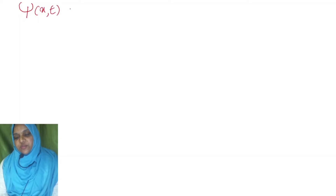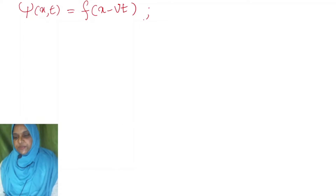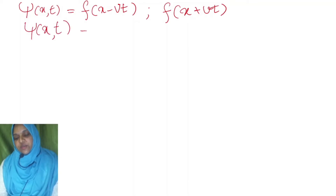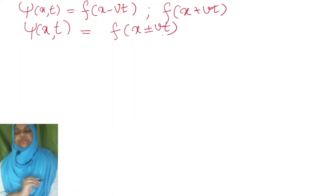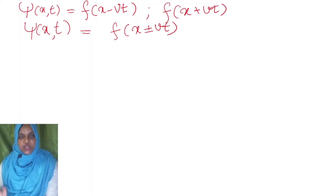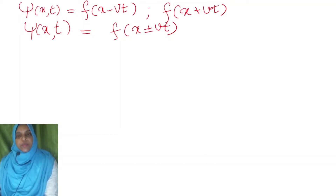A wave traveling along the positive x direction can be represented as ψ(x, t) = f(x − vt), where v is the velocity. If the wave is traveling along the negative x direction, it is represented as f(x + vt). In general, the wave function can be written as ψ(x, t) = f(x ± vt). It represents the displacement of the particle of the medium, or in the case of electromagnetic waves, the amplitude of the electric or magnetic field, or in the case of matter waves, the quantum mechanical probability.